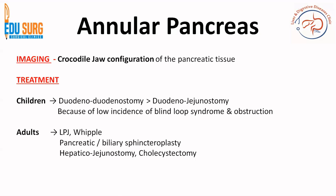The crocodile shown on the first slide represents an important imaging sign: on cross-sectional imaging, the two parts of the pancreas with the duodenum between them create a crocodile jaw configuration. This crocodile jaw configuration — one portion of pancreas anterior and one posterior to the duodenum — is the classic imaging sign for identifying annular pancreas.